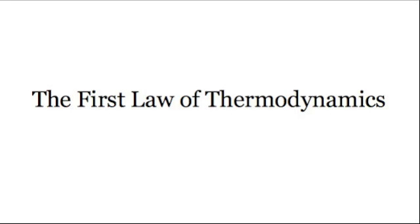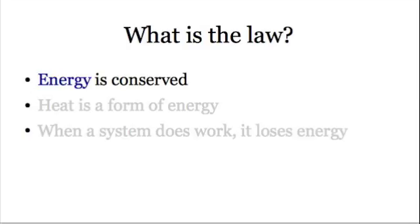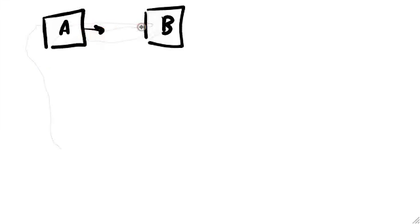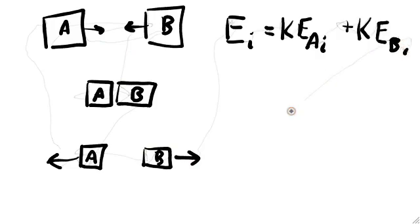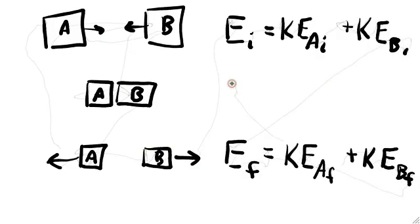The first law of thermodynamics is all about energy. And in particular, it says that energy is always conserved. Nowadays, people just tend to accept this statement, but it's actually a little bit surprising from the point of view of basic mechanics. The question of energy conservation in mechanics shows up in collision problems. In an elastic collision, where the objects collide and bounce off of each other, we are used to writing down the initial and final total energies and setting them equal to each other to help solve the problem.